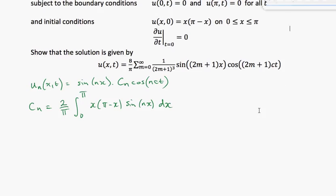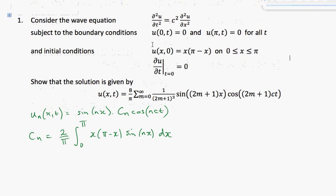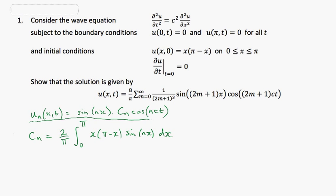We're on the last leg now. We've used the boundary conditions and the initial conditions, and we've ended up with the solution — a set of solutions all of the form sine(nx) times some coefficient times cos(nct). We can work out the c_n's by doing this integral.